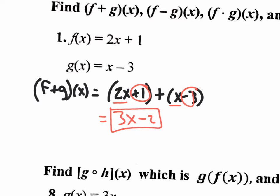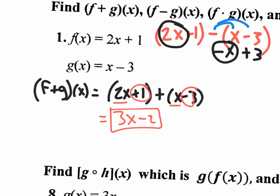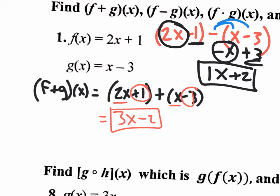So then you're supposed to subtract. If we subtract f of x take away g of x, that's going to be the 2x plus 1 minus the g of x function, and the g of x function is x minus 3. Right here it is important that we use parentheses because you need to distribute the minus sign into both terms. So you're going to have a negative x and a positive 3 instead of a positive x and a negative 3. Then you combine 2x with negative x — that'll be 1x. Then combine the 1 with the positive 3, and that'll be plus 2.